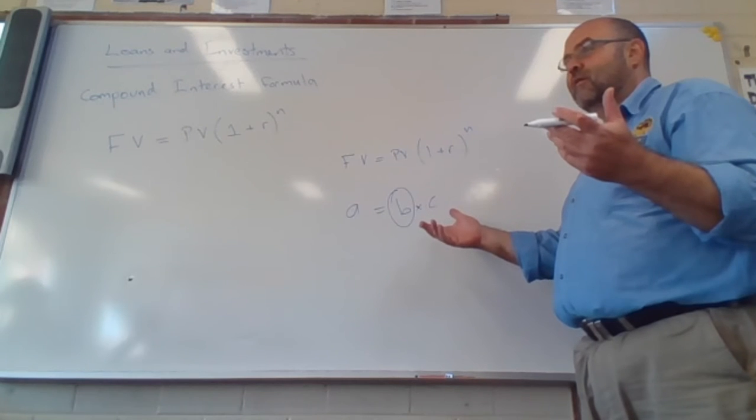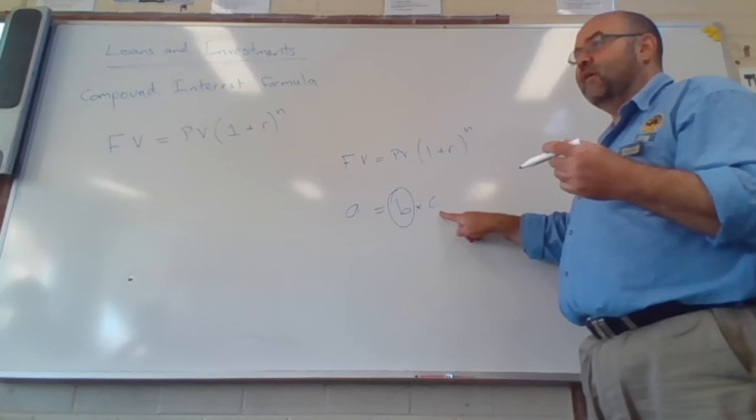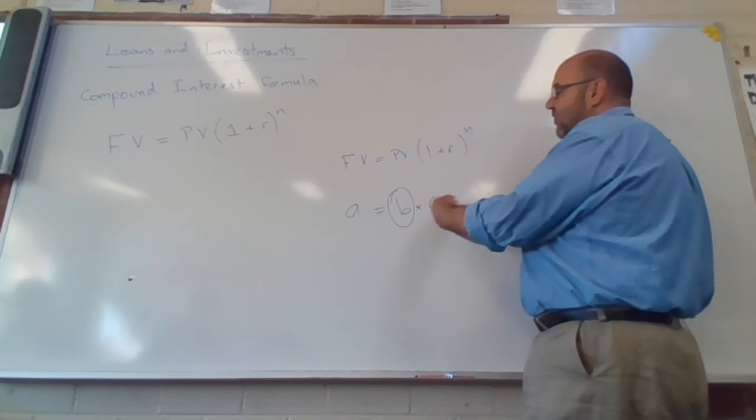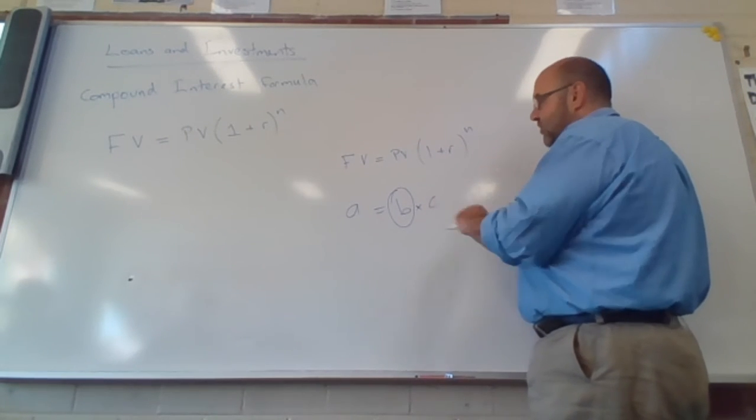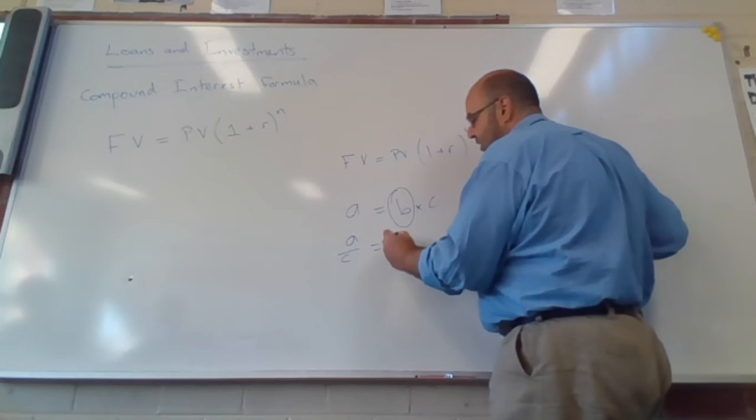It's OK. You can answer me. OK, right, it's multiplying. So the C is multiplying on the right-hand side. So if I want to get rid of the C, then I divide. So A divided by C equals B.